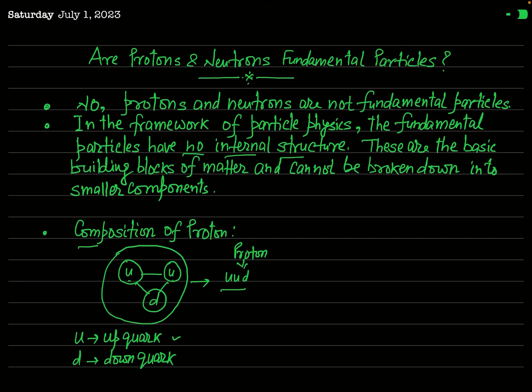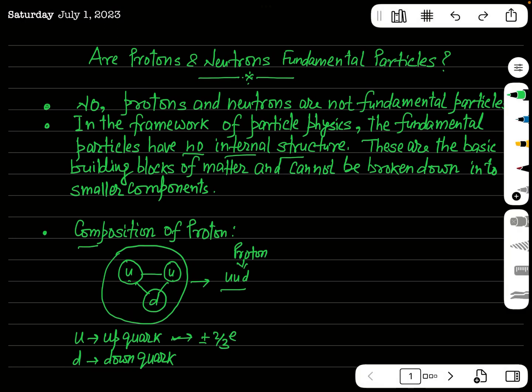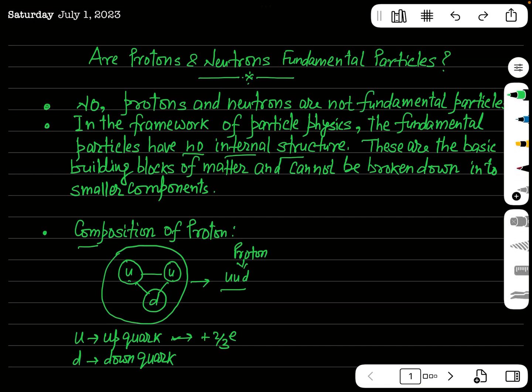We can calculate all the quantum numbers and properties of the proton on the basis of this quark structure. For the charge: the charge of an up quark is plus two-thirds E, meaning it is two-thirds of the electron charge but positive. While the charge of a down quark is minus one-third E.